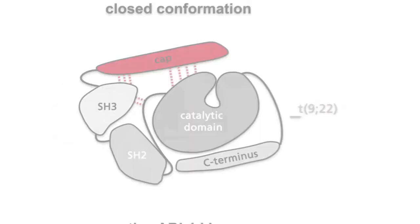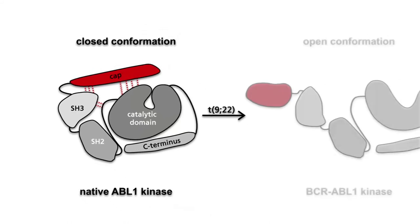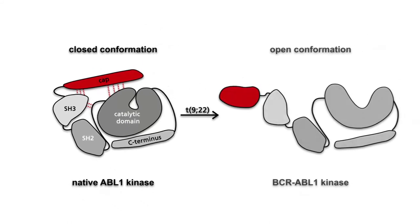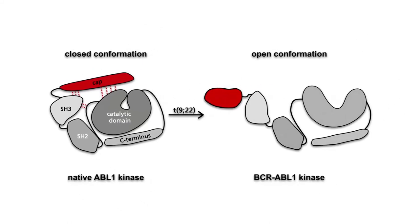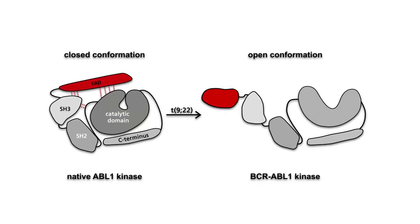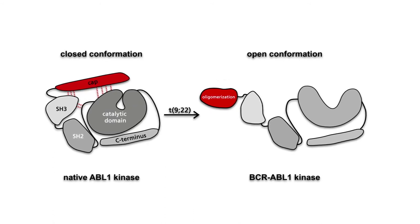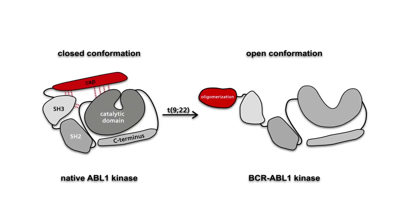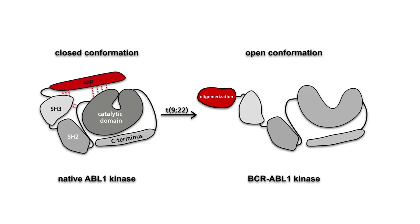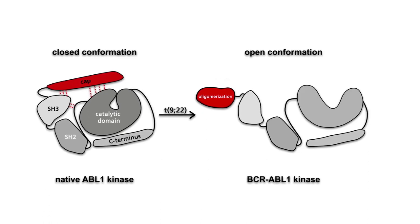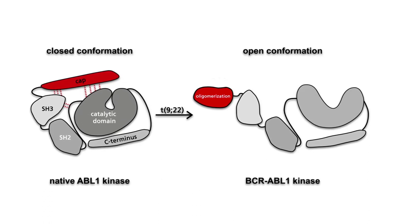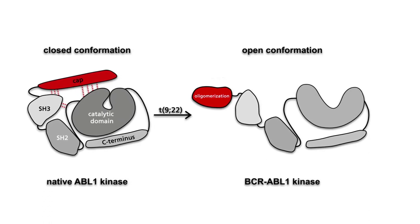The T922 translocation leads to the replacement of the CAP domain of the ABL kinase by the oligomerization domain of BCR. Consequently, the closed conformation is destabilized, while the open conformation is stabilized.